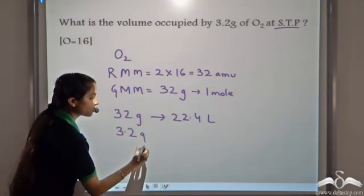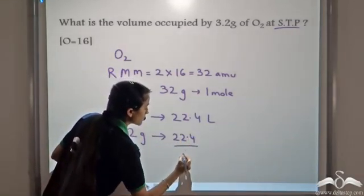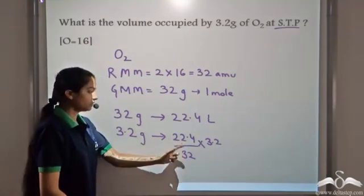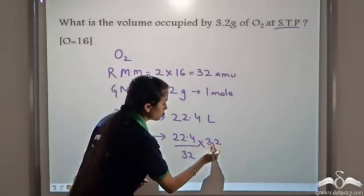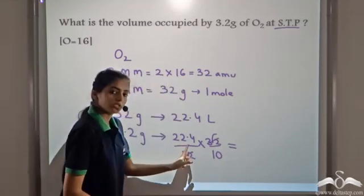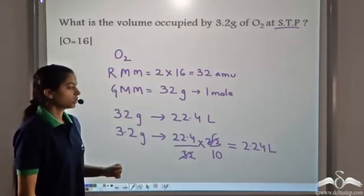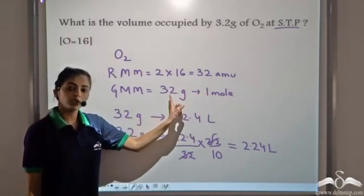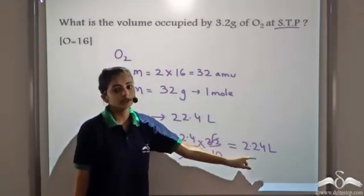So if we have 3.2 grams of oxygen gas, by the unitary method we get 22.4 divided by 32, multiplied by the amount given, which is 3.2. This gives us 22.4 divided by 10, which is 2.24 litres. So 1 mole of gas occupies 22.4 litres at STP, and in this case 1 mole is 32 grams. So if we are given 3.2 grams of oxygen gas, that occupies 2.24 litres at STP.